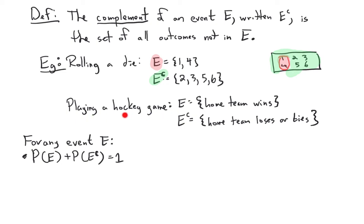Another example: if the experiment is playing a hockey game and event E is the home team winning, then the complement E^c is the home team not winning — meaning the home team either loses or ties. Since all outcome probabilities sum to 1, we have P(E) + P(E^c) = 1.